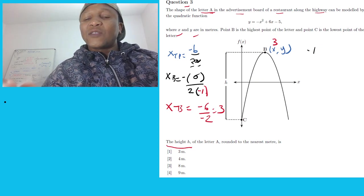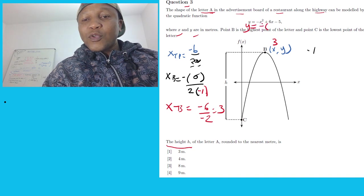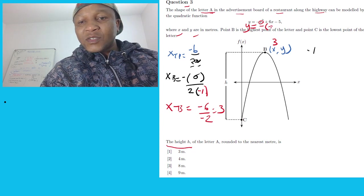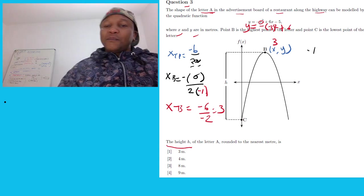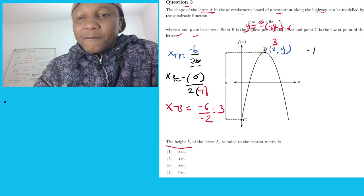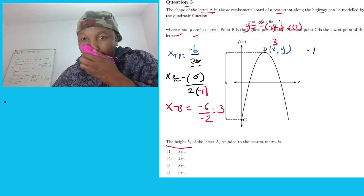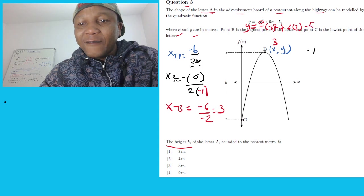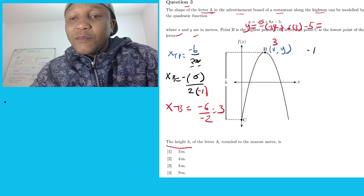Now I have the value of x. To get y at the turning point, I substitute x equals 3 back into the original equation. So y equals negative (3) squared plus 6 times 3, minus 5.